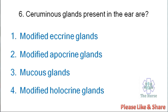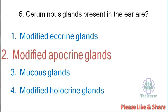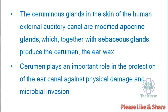Next question: Ceruminous glands present in the ears are — modified eccrine gland, modified apocrine gland, mucus glands, or modified holocrine gland? Correct answer is modified apocrine glands. The ceruminous glands in the skin of the human external auditory canal are modified apocrine glands which, together with sebaceous glands, produce cerumen (earwax). Cerumen plays an important role in the protection of the ear canal against physical damage and microbial invasion.